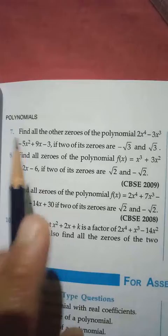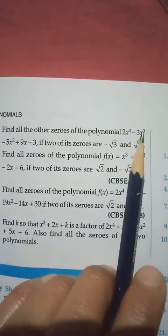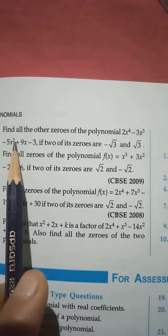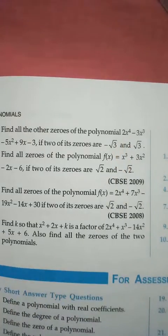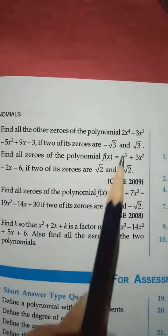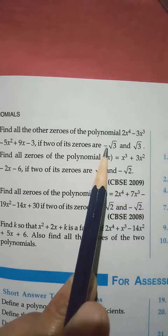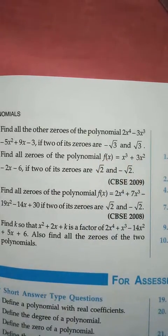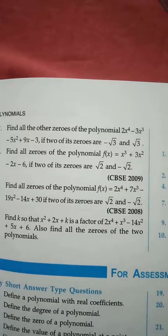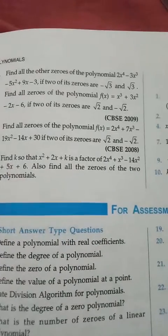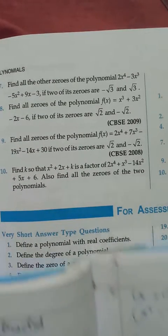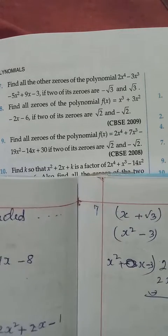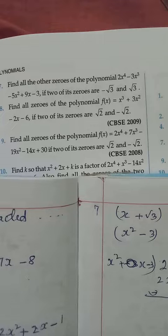Moving to the next question: we have polynomial 2x⁴ - 3x³ - 5x² + 9x - 3. Since we have power 4, we will get 4 values for x. They give us two zeros: -√3 and √3. We have to find two more, since the number of zeros depends on the highest power of the polynomial.